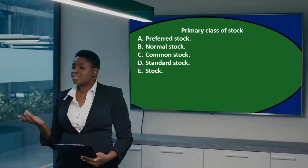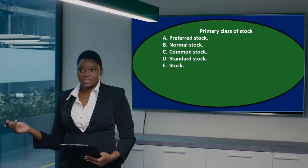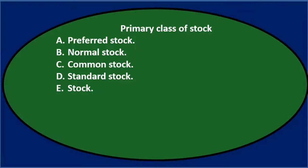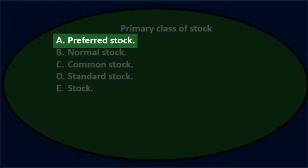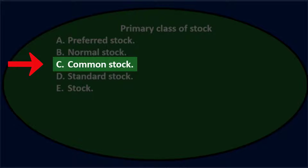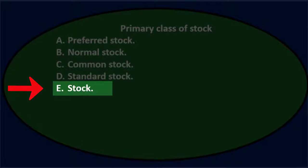In this presentation we will take a look at multiple choice questions related to corporations. First question: primary class of stock. A. Preferred stock. B. Normal stock. C. Common stock. D. Standard stock. E. Stock.